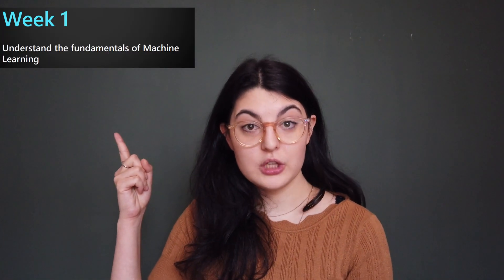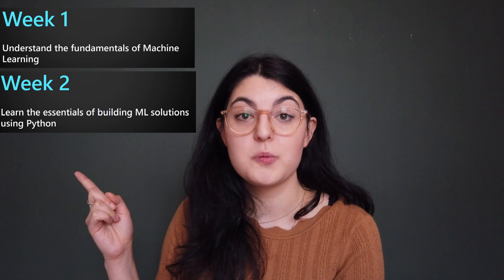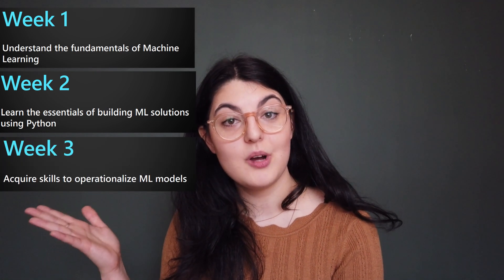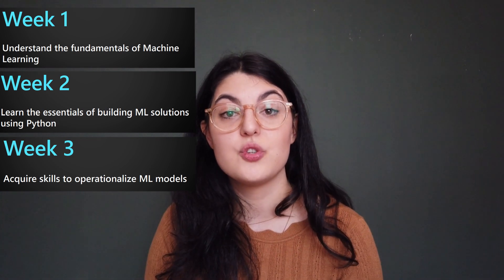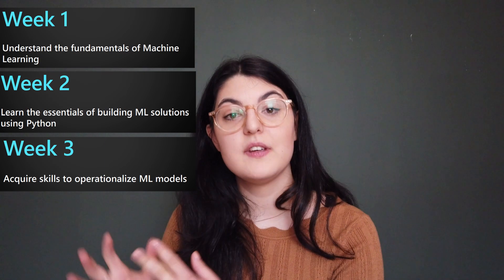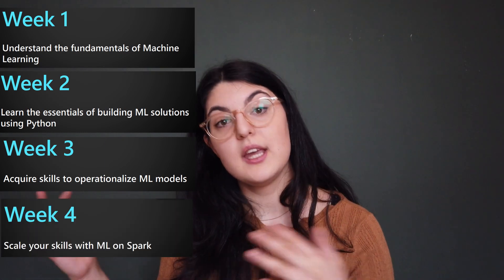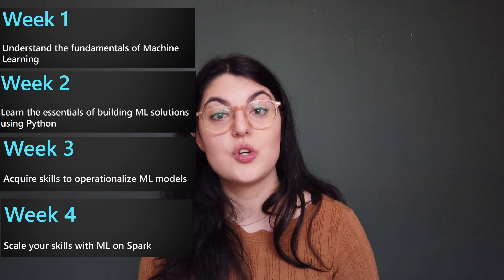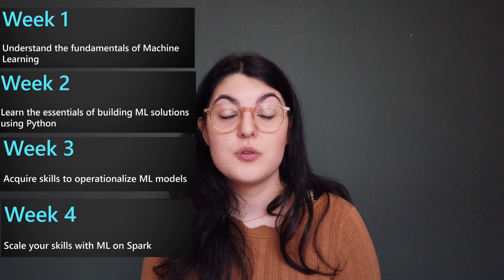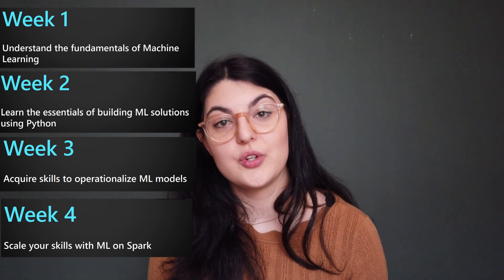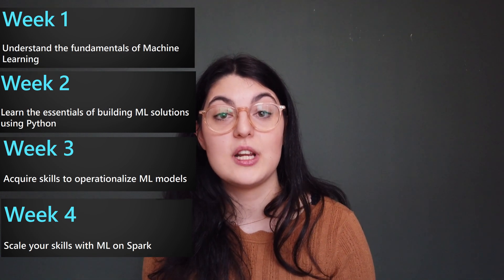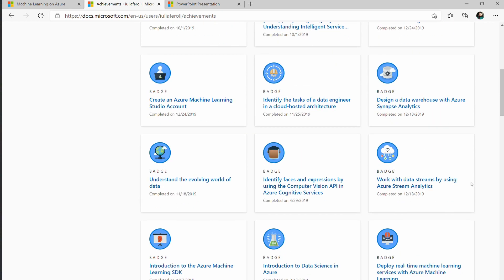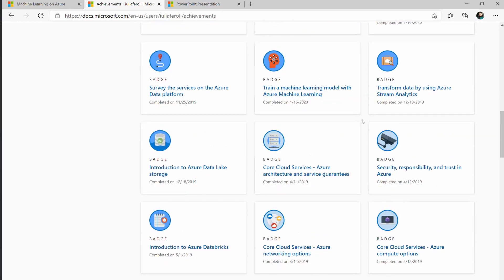The four-week topics are: fundamentals of machine learning; learn the essentials of building models with Python, which is the most popular data science language — you can also do it with R but I mainly use Python; acquire skills to operationalize machine learning models, which is more into the cloud mindset but something you'd do as a non-cloud data scientist too; and finally scaling your ML skills with Spark, which is a great way to distribute your code and make it a lot more efficient. If you go through this you'll first learn how to be a machine learning data scientist, and then you'll have all these extra skills to add to your CV. You can do some projects using them to showcase your understanding, and you'll also earn certificates and badges to show employers that you've put the time in to do this training.